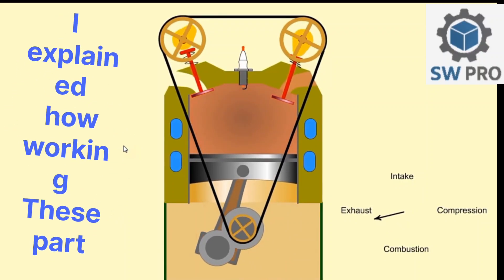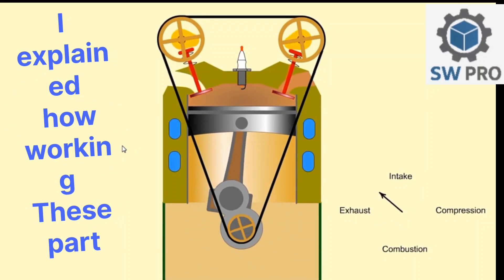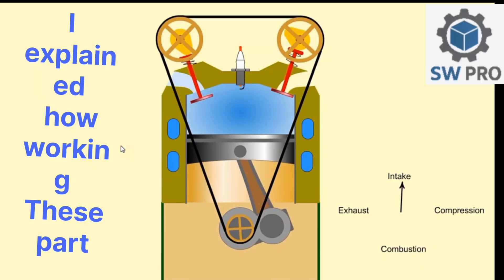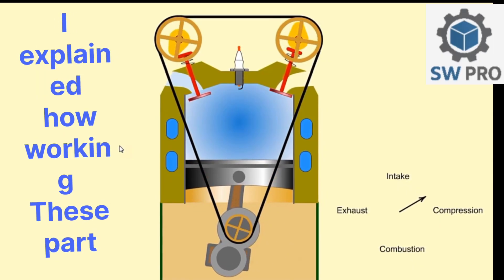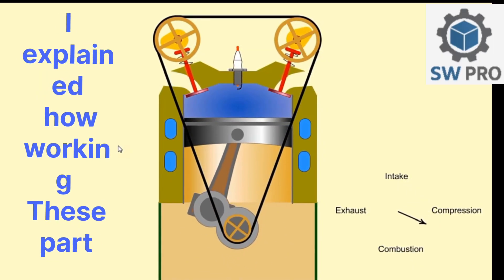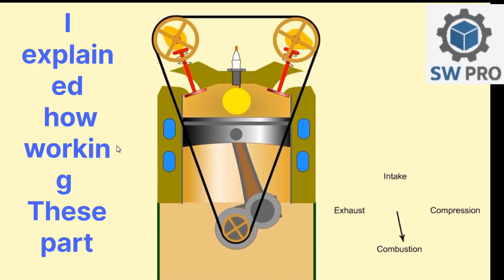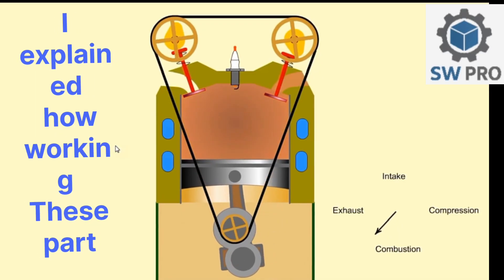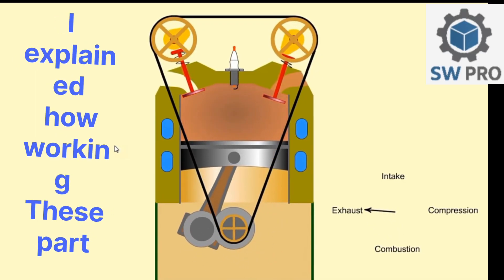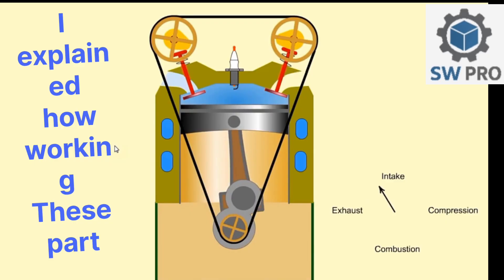With a four-stroke engine in operation: intake - a mixture of fuel and air is drawn into the cylinder; compression - the piston compresses the mixture; combustion - compressed gas is ignited by a spark plug; and exhaust - burnt gases are expelled from the cylinder.